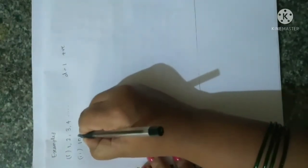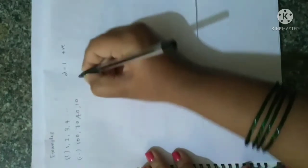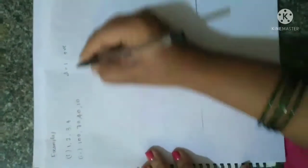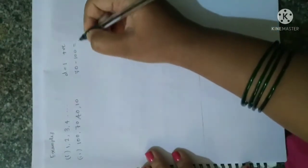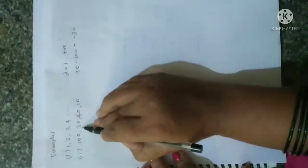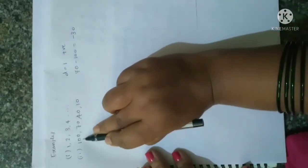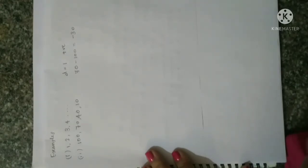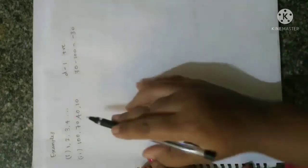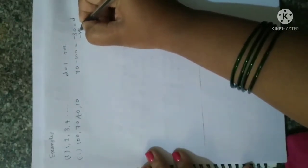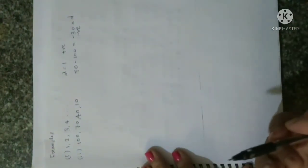Example 2: 100, 70, 40, 10. Always do second term minus first term — next term minus previous term, remember that, not a₁ minus a₂ but a₂ minus a₁. So 70−100=−30, 40−70=−30, 10−40=−30. The common difference is −30, which is negative. So the fixed number can be negative.